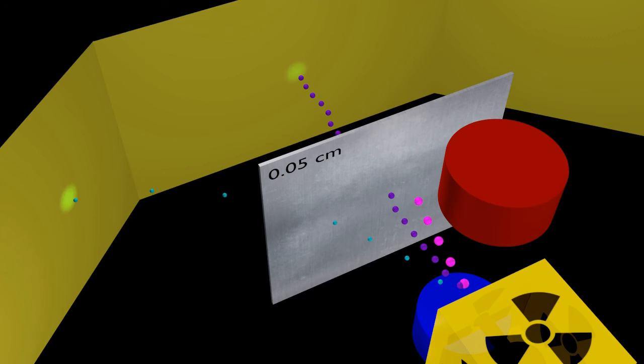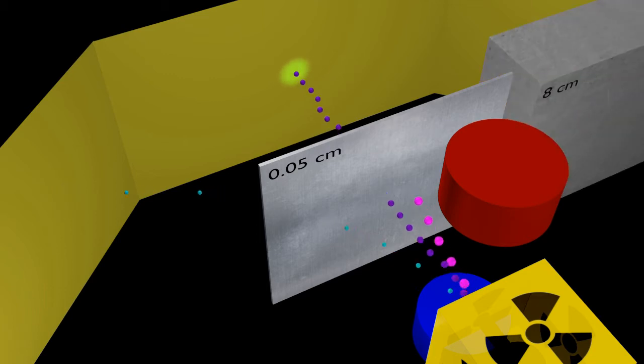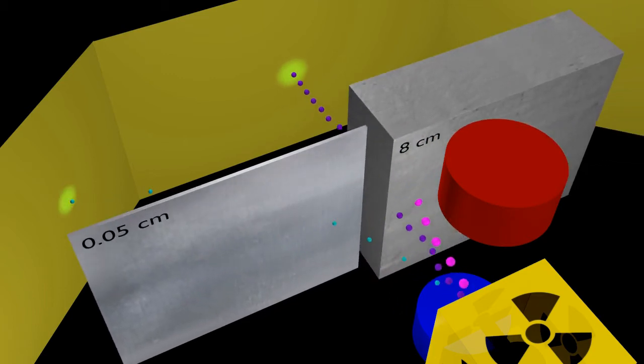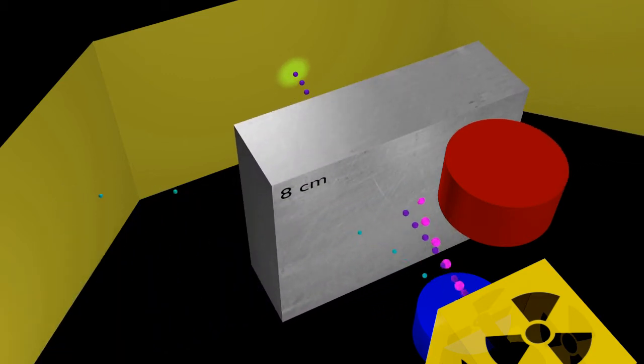Namely, if we take 0.0005 cm thick aluminum foil, the intensity of beta particles will be reduced to half, while alpha particles will be absorbed completely.